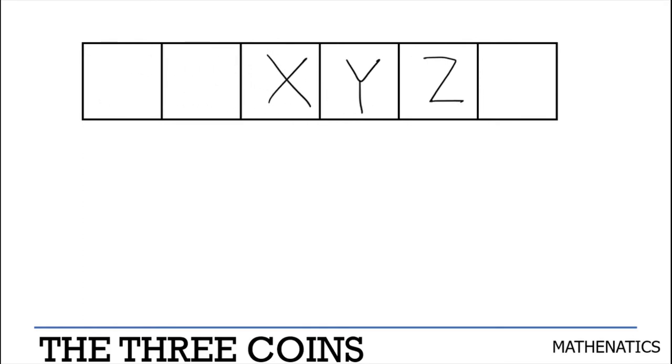You can only move X, Y, and Z through legal moves. A legal move consists of moving a letter or a coin one space to the right, if and only if that space is empty.